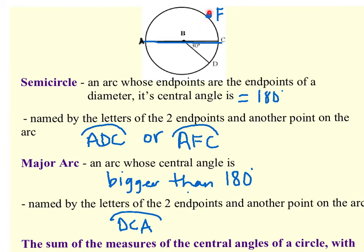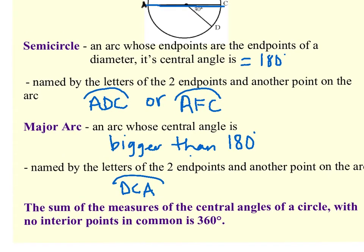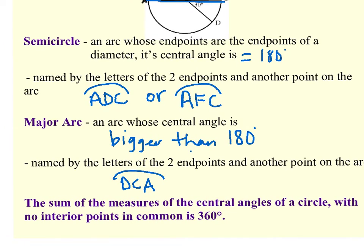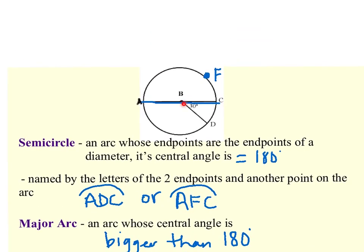If I use point F that I added before, I could write down other major arcs. For example, DAF — endpoint D goes through A and stops at F. That's a major arc because it's bigger than a semicircle. The other important thing to notice is that the sum of the central angles of a circle with no interior points in common is 360 degrees. If you add up all the central angles, it should always total 360 degrees. That's why a semicircle's central angle is 180 degrees — all the way around is 360, and half of that is 180.